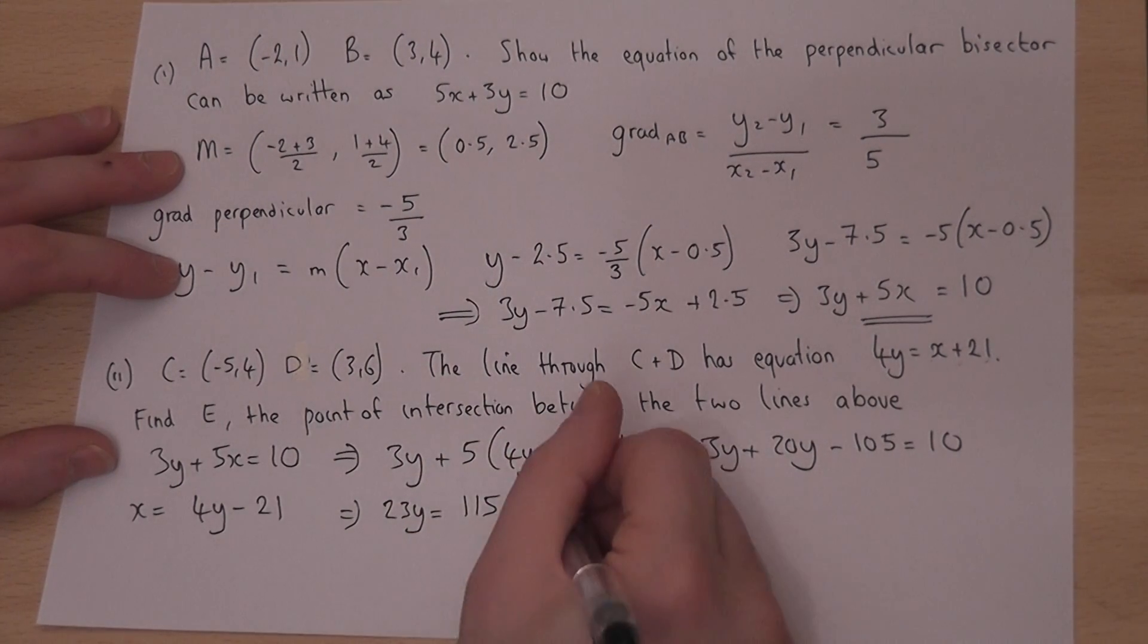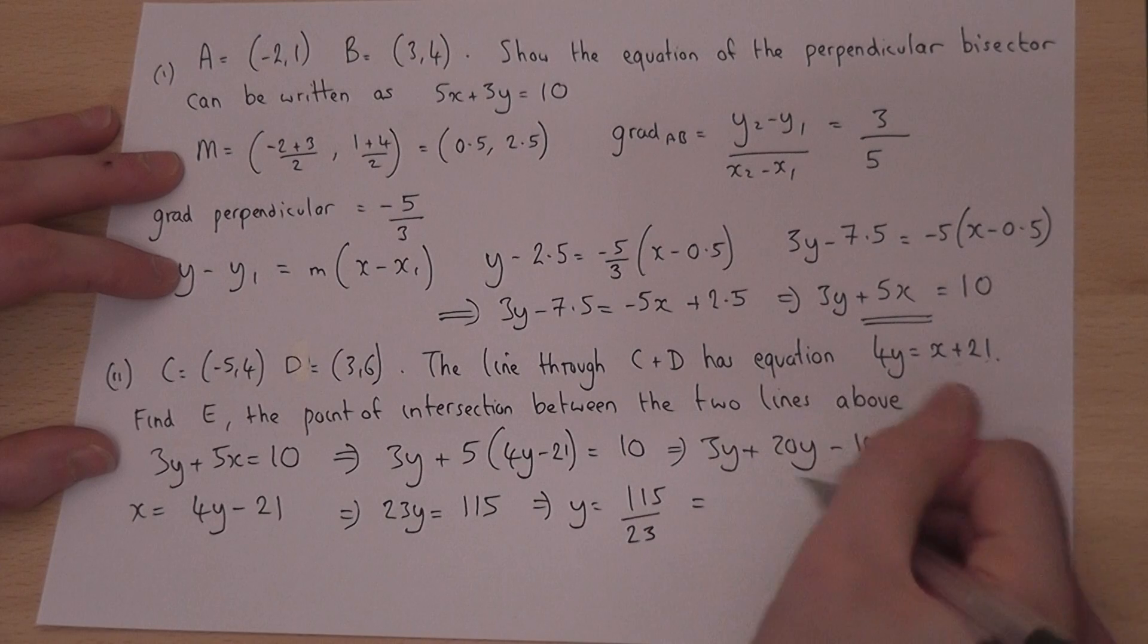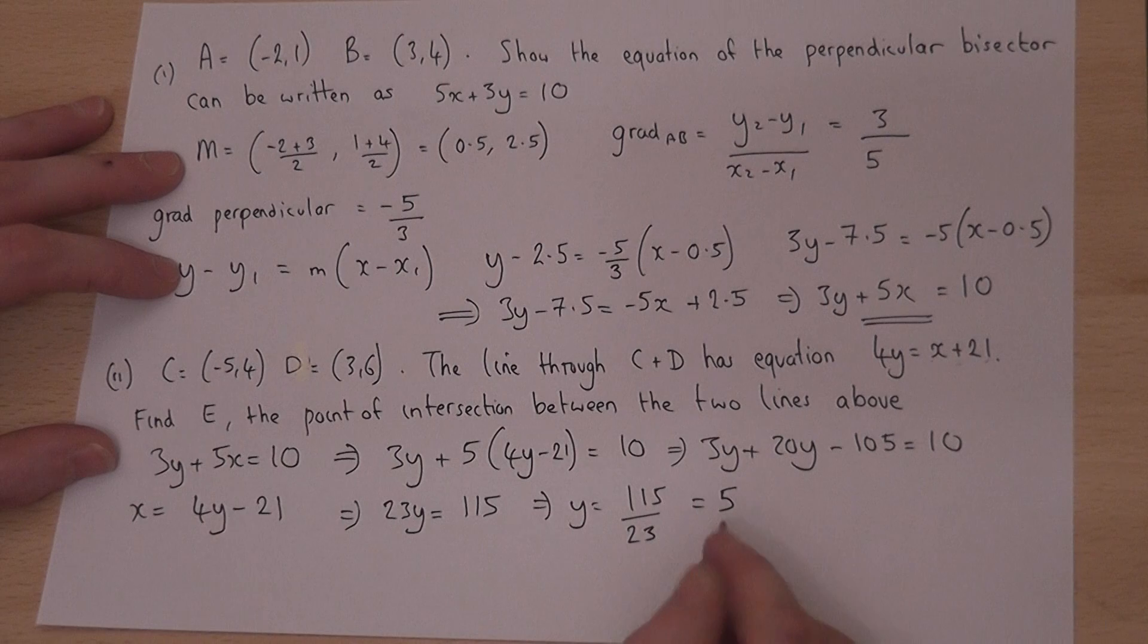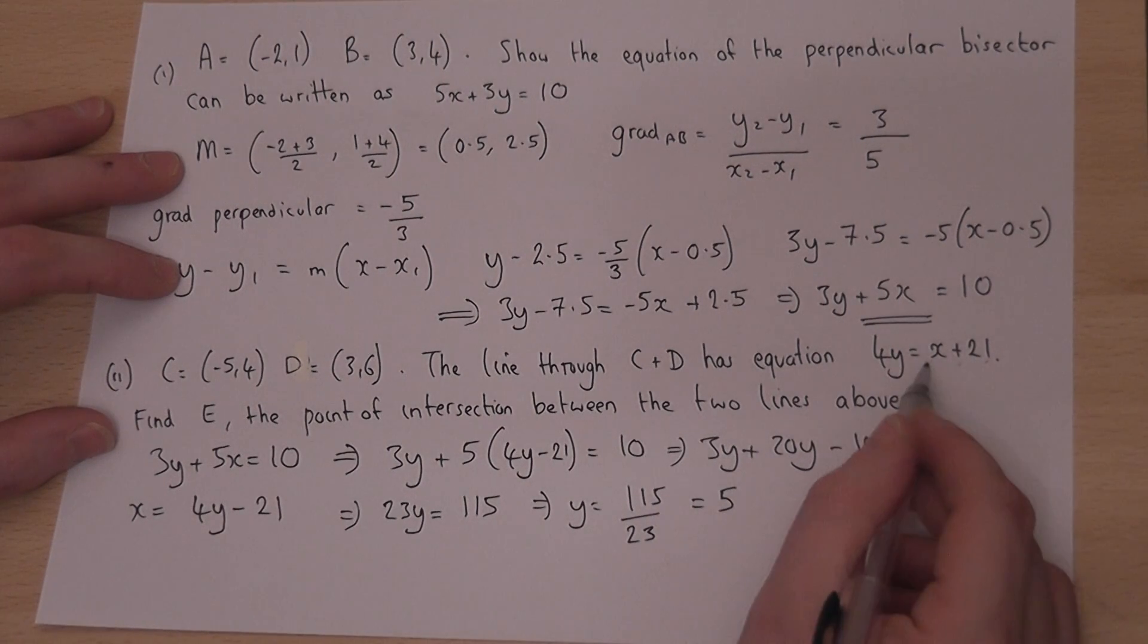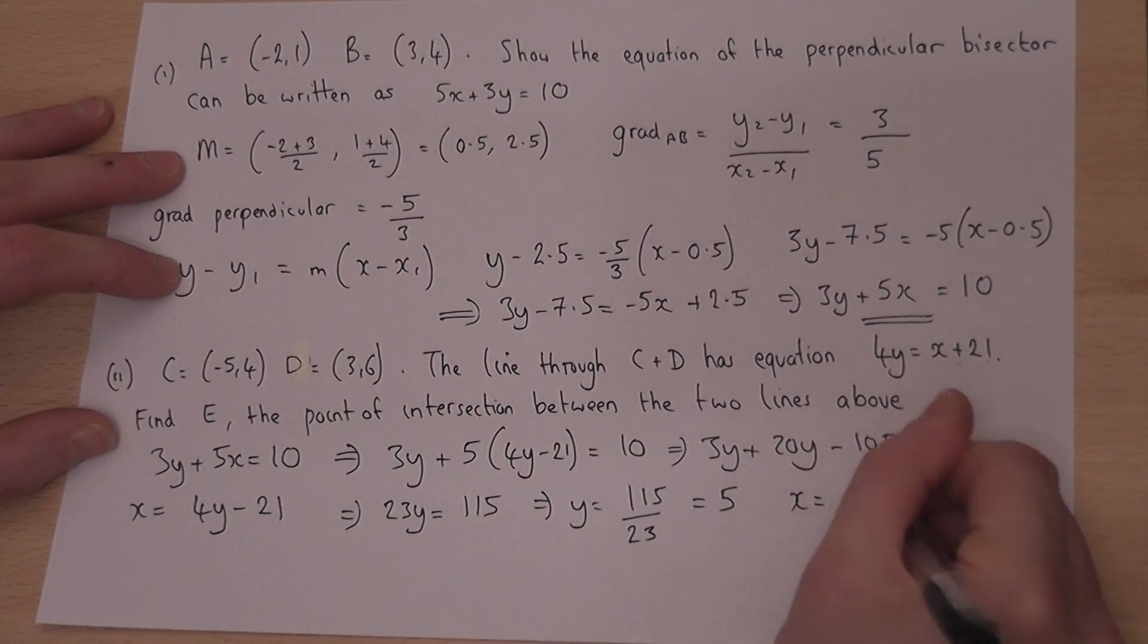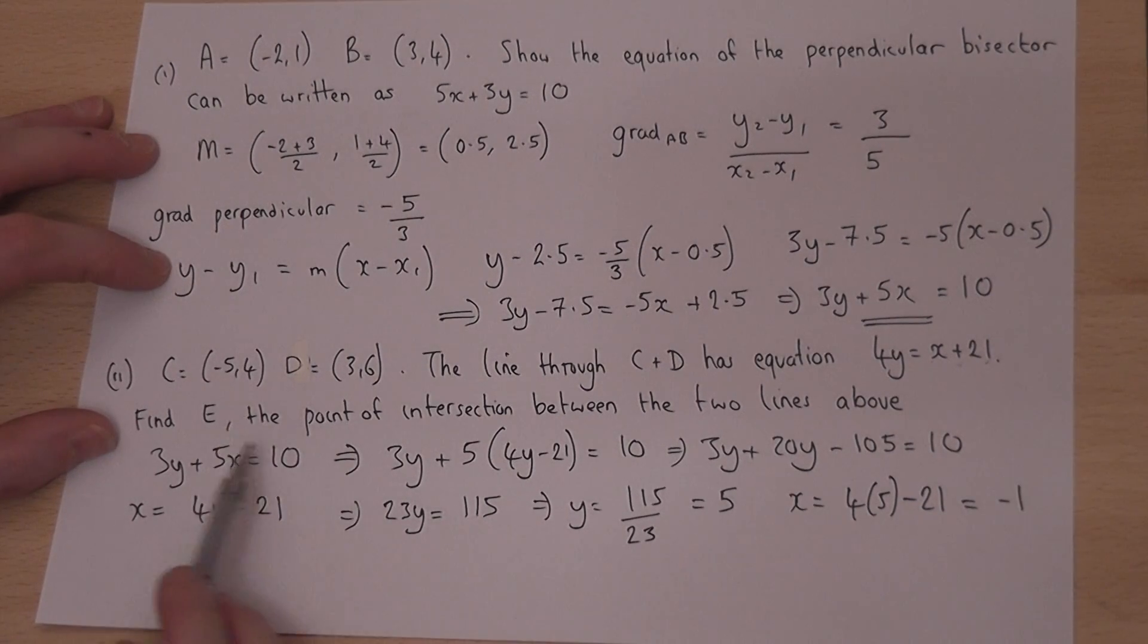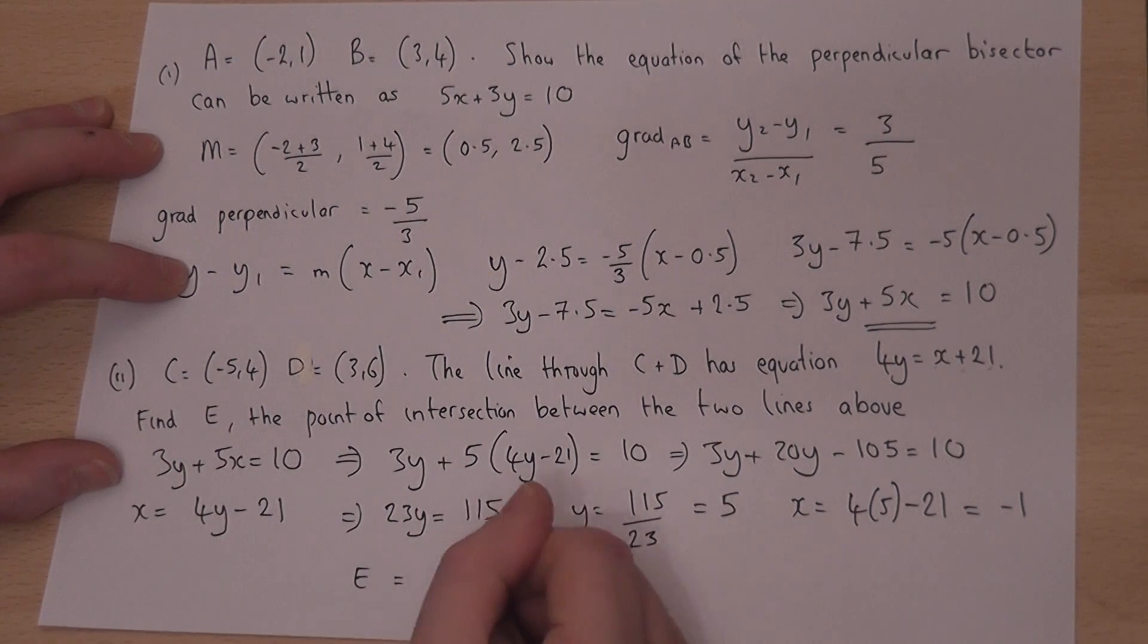So that tells me therefore that y equals 115 over 23, which just equals 5. And if y equals 5, I can find x. x just equals 4y take 21. So x equals 4 times y take 21, which is minus 1. So the coordinate of E is just the coordinate x is minus 1 and y is 5.